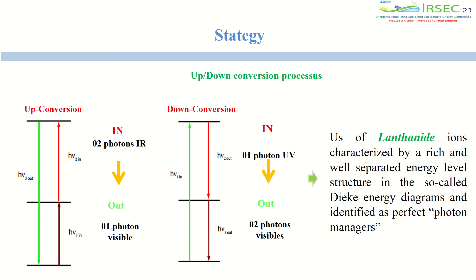Up-conversion is a process in which the sequential absorption of two or more photons leads to the emission of light at a shorter wavelength than the excitation wavelength. One of the materials more extensively studied for this purpose has been lanthanides, or rare earth systems, due to the suitability of their discrete energy levels for photon conversion inside a wide variety of host materials.